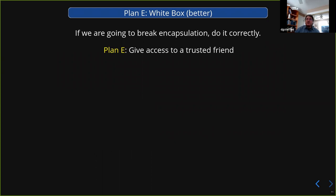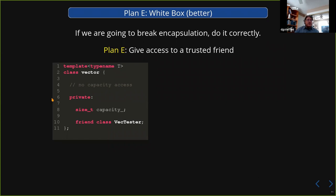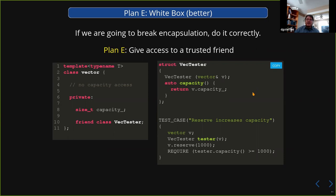Plan E is: if you break encapsulation, do it in a better way — you have a trusted friend. You keep everything private like you wanted in the first place, and you quietly declare a friend class at the bottom of the class. In your unit test framework, you define that friend class — it can now reach in and get access to the innards. Your VecTester takes the vector it's going to autopsy, holds a reference to it, and in your test case you make your vector, do things to it, make a VecTester and pass in V, and now you can query your testing class to see what's going on with the innards.